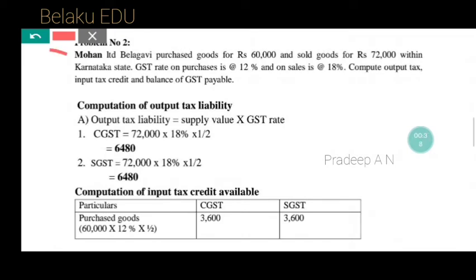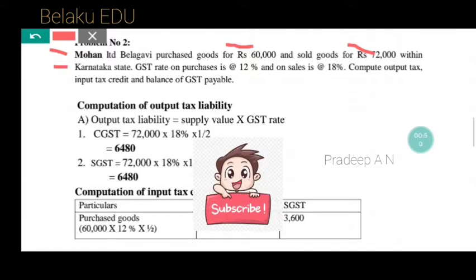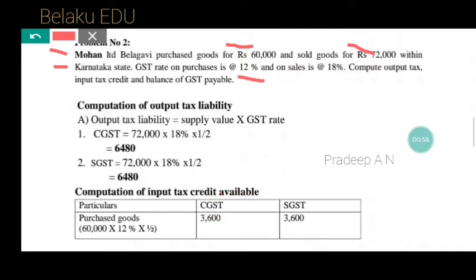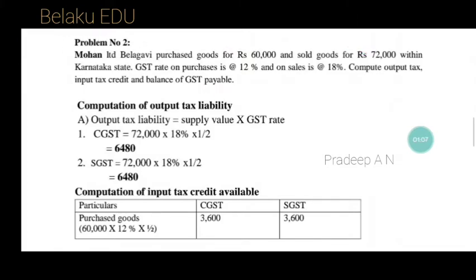Mohan Limited, Belgavi purchased goods for Rs. 60,000 and sold for Rs. 72,000 within Karnataka state. GST rate on purchase is at 12% and on sales is at 18%. Compute the output tax, input tax credit, and balance of GST payable. In my last video I have discussed a brief introduction regarding ITC — please go through that one also.